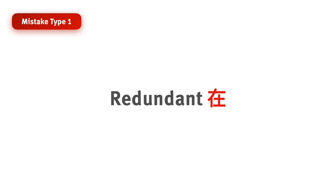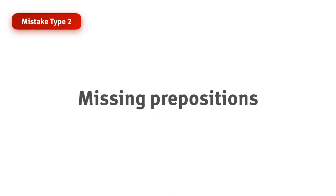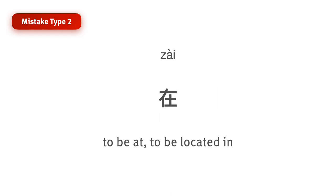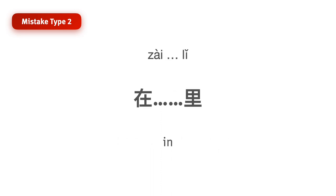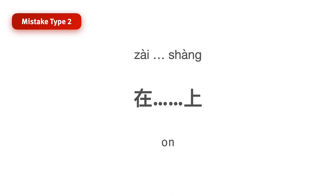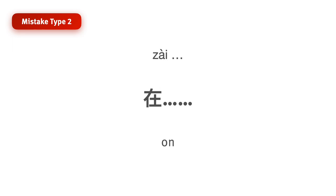Alright, so that was the first common mistake with 在 — adding it when it's not really needed. The second type of mistake people make with 在 is missing prepositions. Oftentimes, the word 在 cannot be used alone. It has to be used together with a preposition like 里, 下, 上, etc. So if the preposition goes missing, the sentence can sound off.